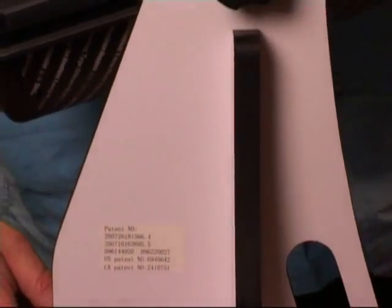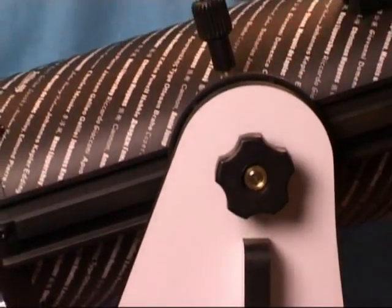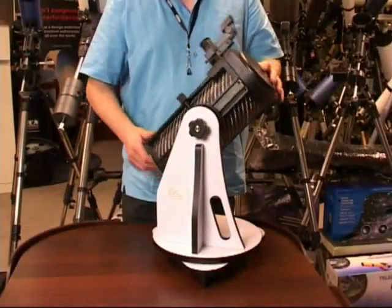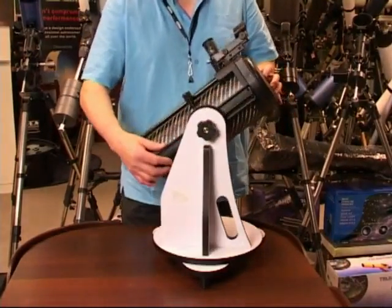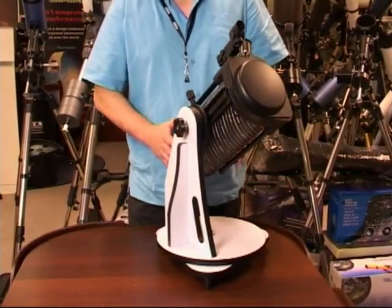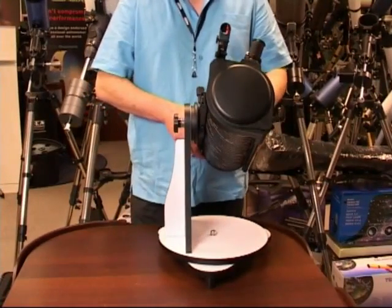The Heritage 130P features a Dobsonian mounting which makes the instrument very easy to use. Simply tilting it in altitude to follow the target and rotating in azimuth. Very simple to use. No drives or anything like that or any kind of complications. Just point it at the target you want to look at and you're away.